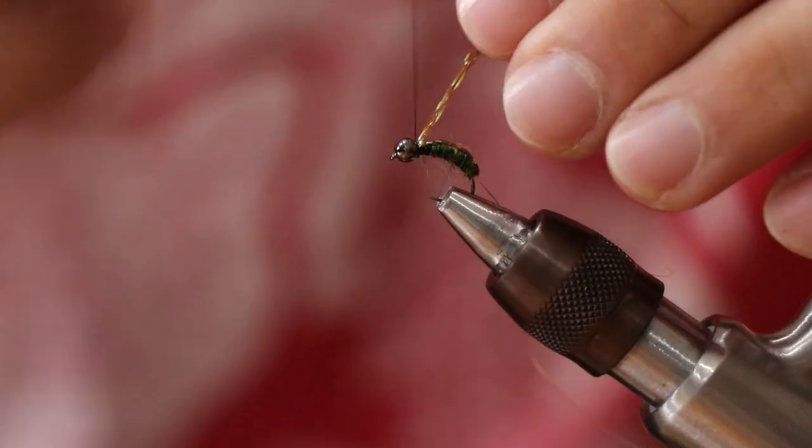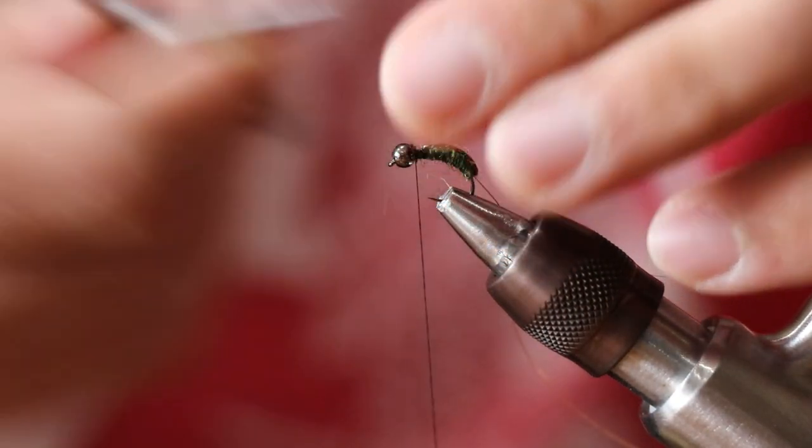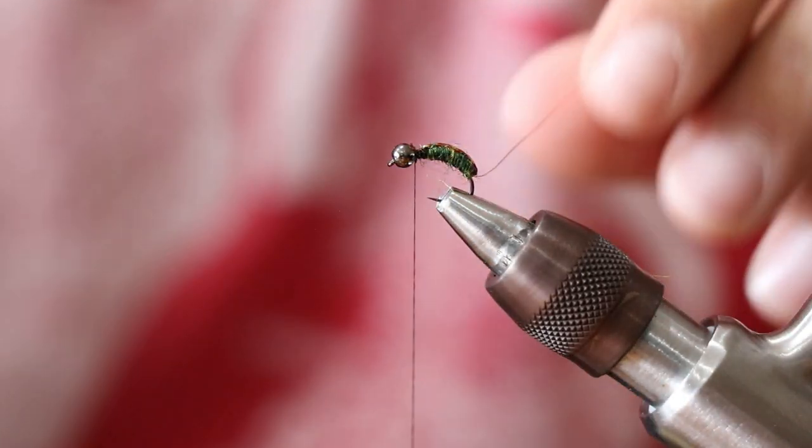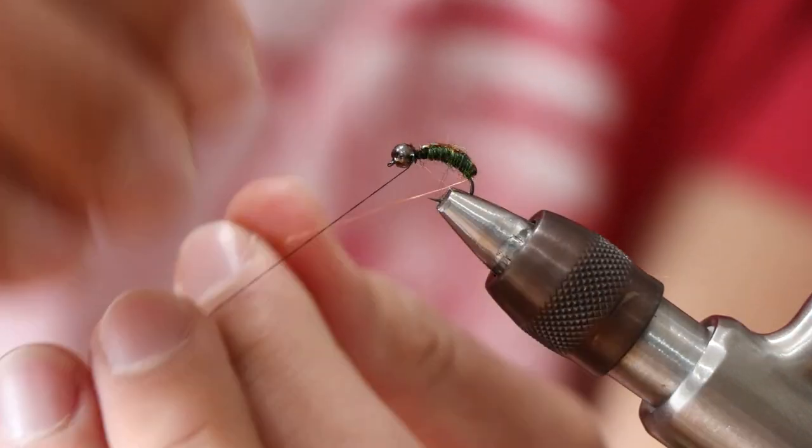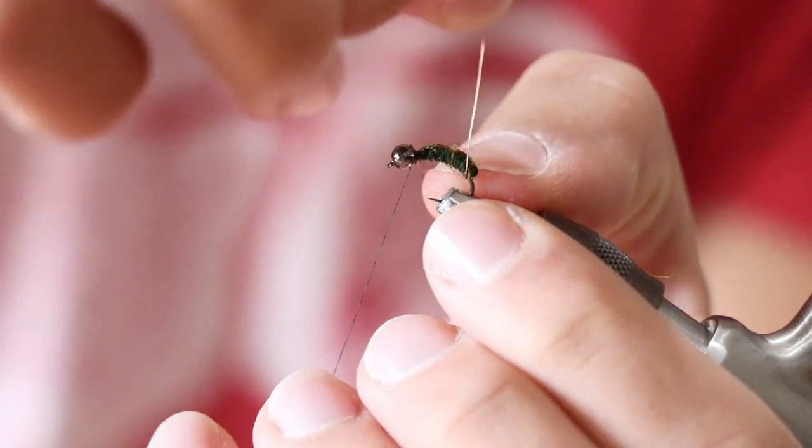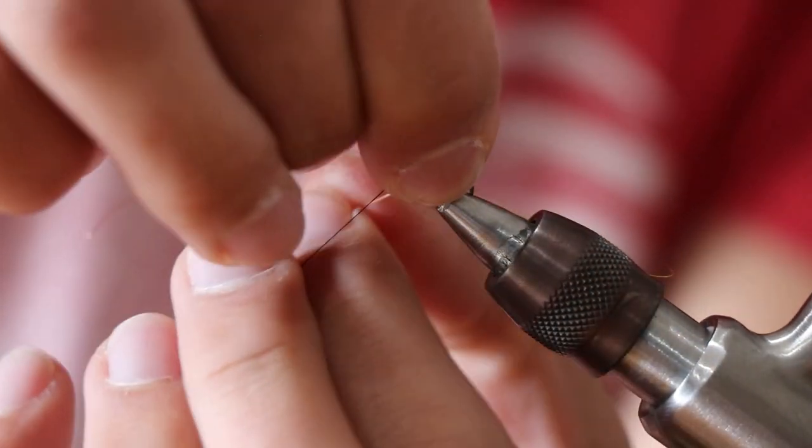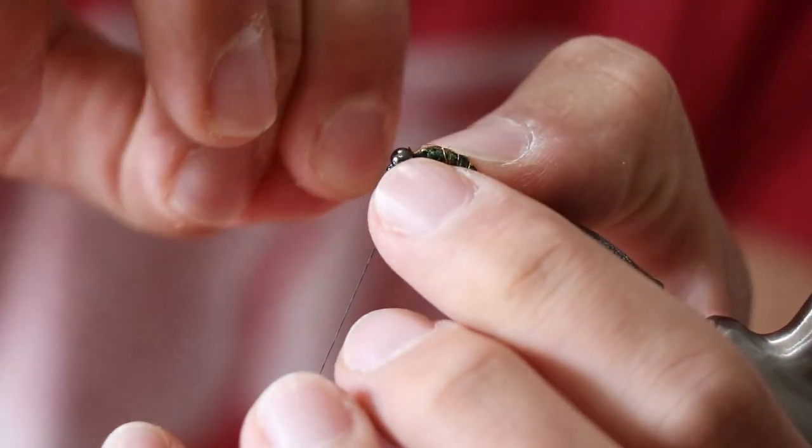Then we can go ahead and actually tie those materials in, trim off the excess. Now we're going to come in and do opposite wraps that we did with everything else with our wire. One thing I like to do is when I'm doing these wraps, I'll hold the flash just to make sure that the wire isn't pulling it off to one side and it still stays centered on the back of the fly.